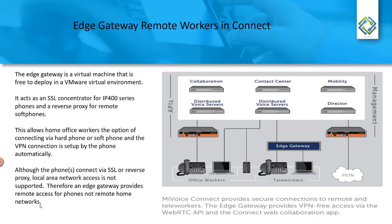The edge gateway acts as a VPN concentrator — you can see here that it supports both a hard phone and a soft phone. Workers connecting through the edge gateway get network connectivity only for the telephony network. This means the phone or Connect client does not provide any access to your corporate data network. It is not a replacement for an SSL client connection to access the data network — this is purely to connect to your voice network.